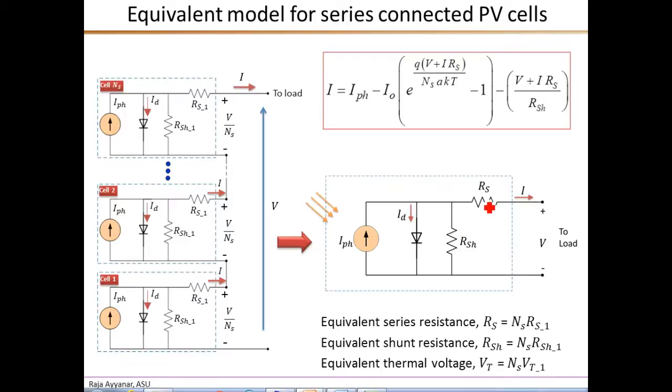The two resistances are also different. So the value of the series resistance RS for the entire module is NS times the series resistance of a single PV cell. Similarly, RShunt is NS times the shunt resistance of a single PV cell.